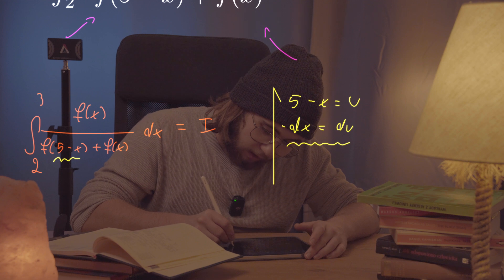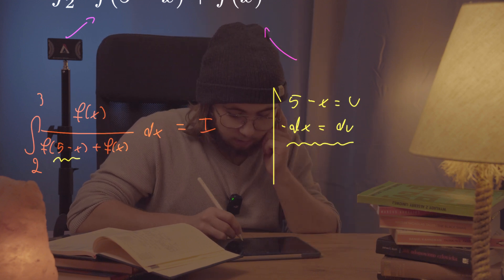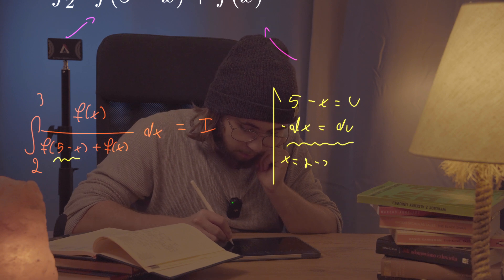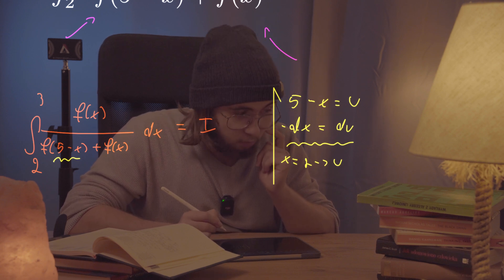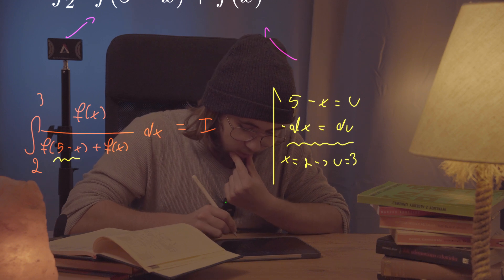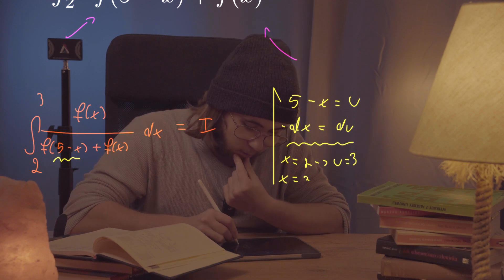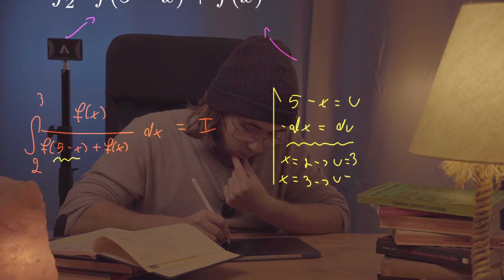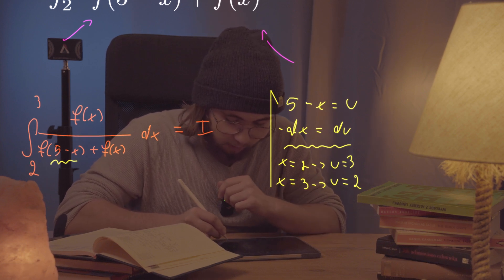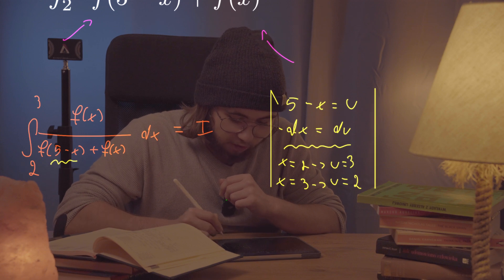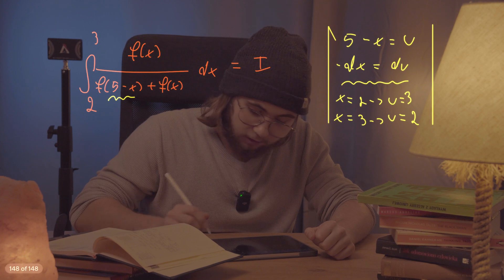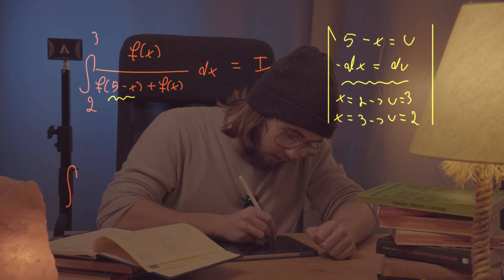Now for the bounds of integration: when x equals two, u will equal five minus two which is three. And when x equals three, u will equal five minus three which is two. So those bounds of integration flip — they just swap around.